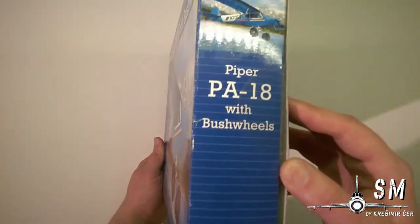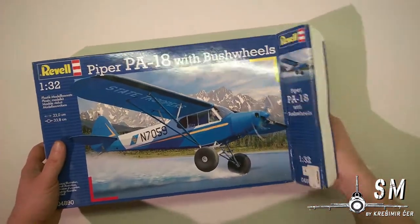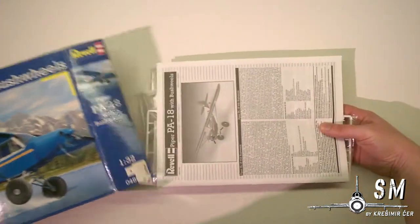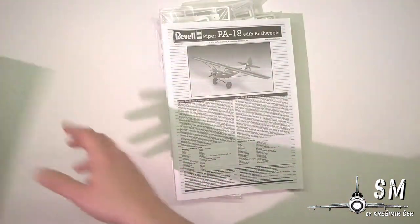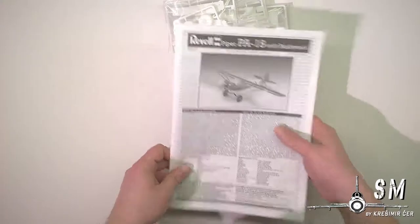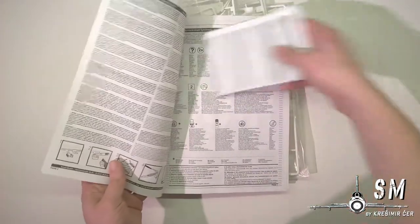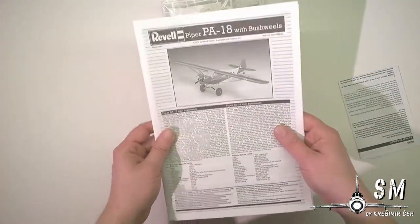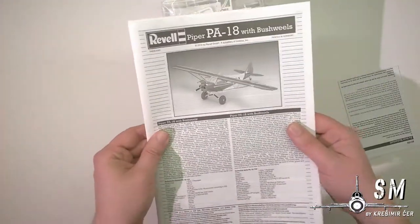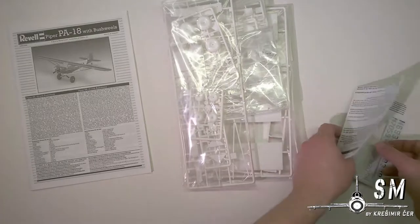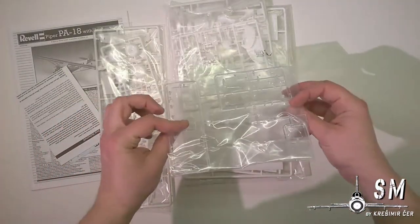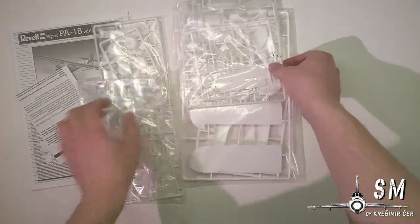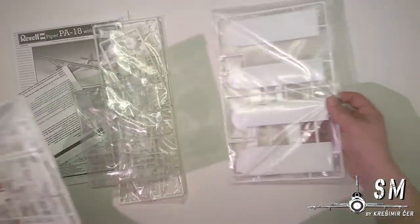So let's look what is inside the box. We have our instruction sheet, typical Revell black and white. We have our decals and the sprues almost separately packed with 1, 2, 3, 4 bags.